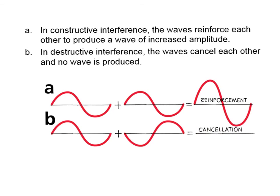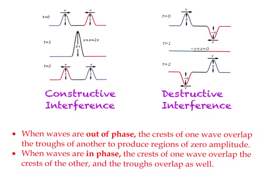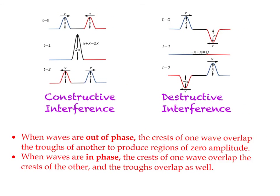We talk about waves being in phase and out of phase. When waves are out of phase, the crests of one wave overlap the troughs of another, producing regions of zero amplitude — this is destructive interference. When waves are in phase, crests overlap crests and troughs overlap troughs, giving us constructive interference.